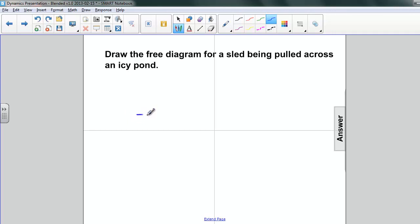Now in this case, we have our sled, and it's on a pond. Nice and icy. It's being pulled. So we're going to have our F here, which is a pull, and there are other forces acting on this.